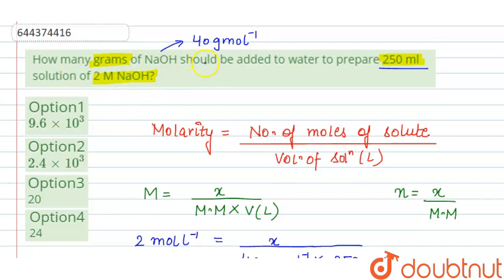So 20 grams of NaOH should be added to water to prepare 250 ml solution of 2 molar NaOH.